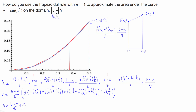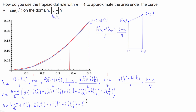We can finish this up by saying the area can be approximated by b minus a over 8, multiplied by: f(0), plus 2 times f(1/8), plus 2 times f(1/4), plus 2 times f(3/8), plus f(1/2).